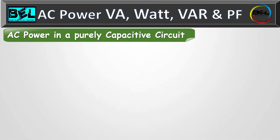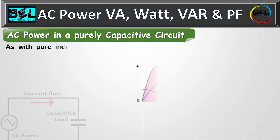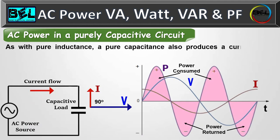Now for the third load: the capacitive circuit. In a purely capacitive circuit, similar to pure inductance, the current flow does no work. In a capacitor, voltage and current are also 90 degrees out of phase, but the difference is that the current is now leading from the voltage — whereas in the inductor the current was lagging by 90 degrees, in the capacitive circuit the current is leading by 90 degrees.